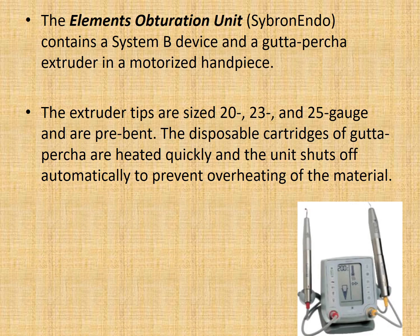The Elements Obturation System by Sybron Endo contains a System B device and a gutta percha extruder in a motorized handpiece. The extruder tips are size 20, 23 and 25 gauge and are pre-bent. The disposable cartridges of gutta percha are heated quickly and the unit shuts off automatically to prevent overheating of the material.